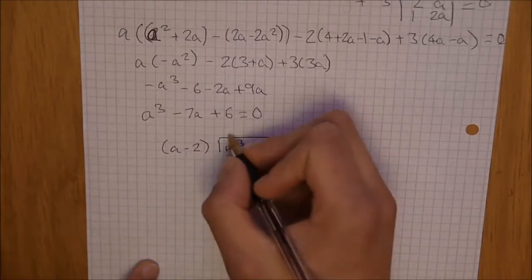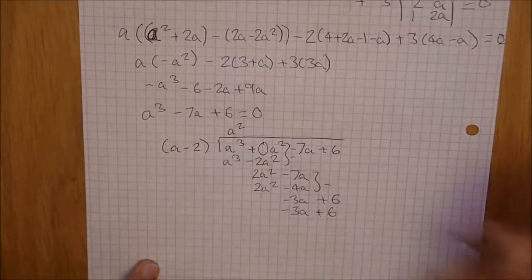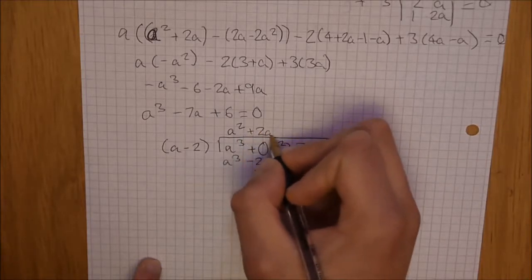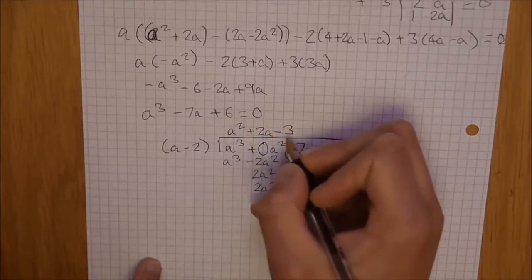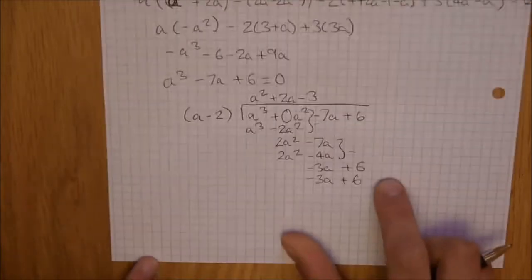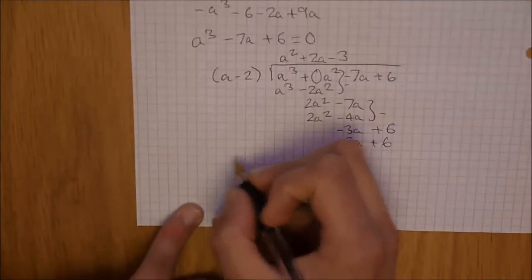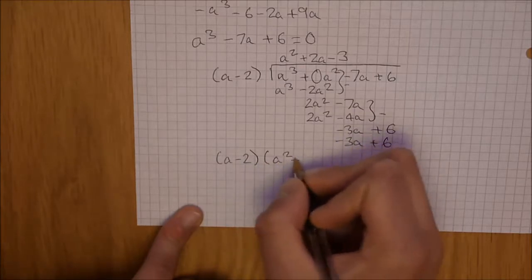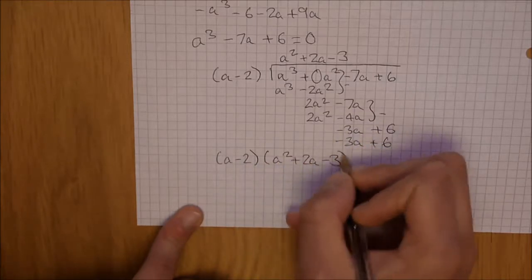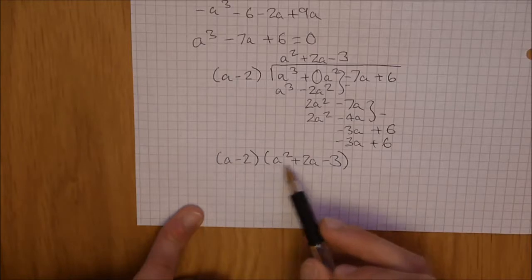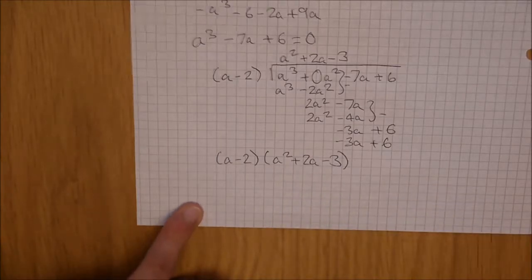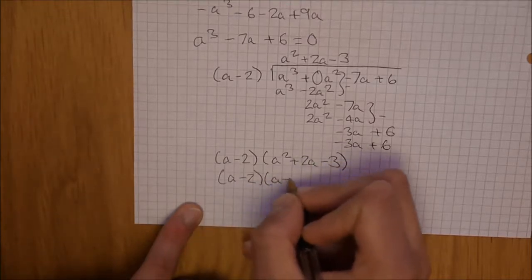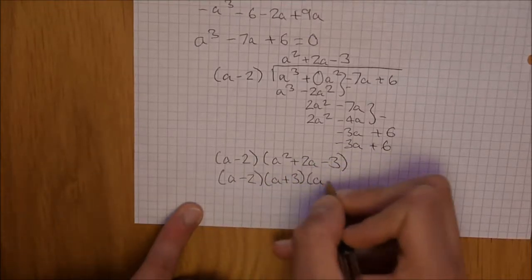And that gives you the quadratic a squared plus 2a minus 3. Now, what we have now is a minus 2, a squared plus 2a minus 3. And a squared plus 2a minus 3 can obviously be solved again, put it into factorised form, as a minus 2, a plus 3, a minus 1.